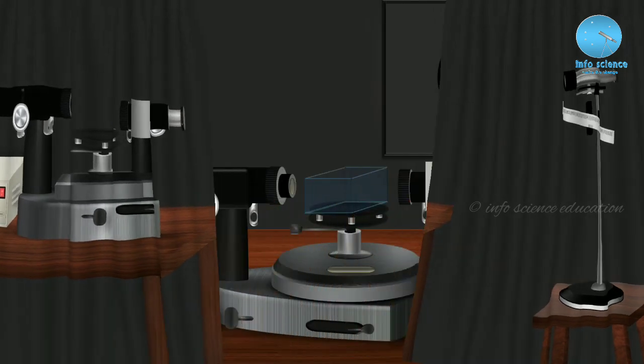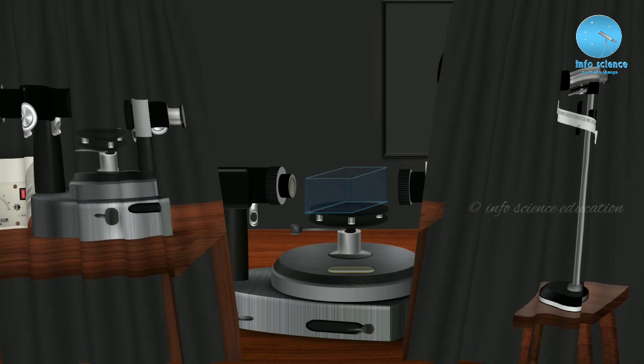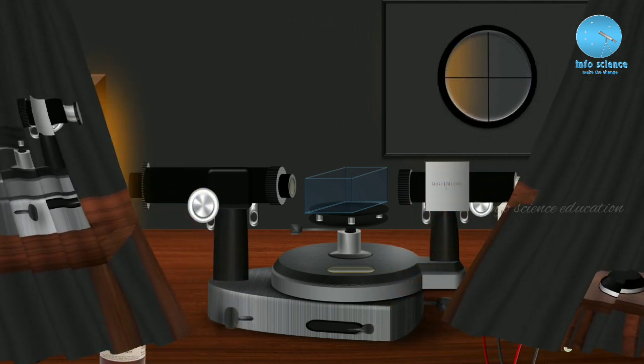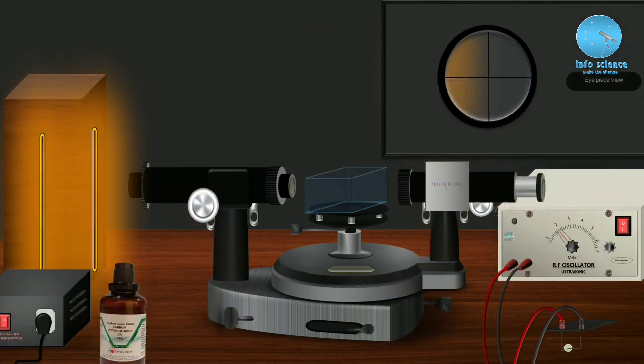For doing this experiment, you have to place a glass tank on the prism table and fill it with the organic compound being used. In this experiment we are using CCl4 solution. First, transfer the CCl4 solution from the bottle to the glass jar — try to use a dropper for transferring the CCl4 solution.